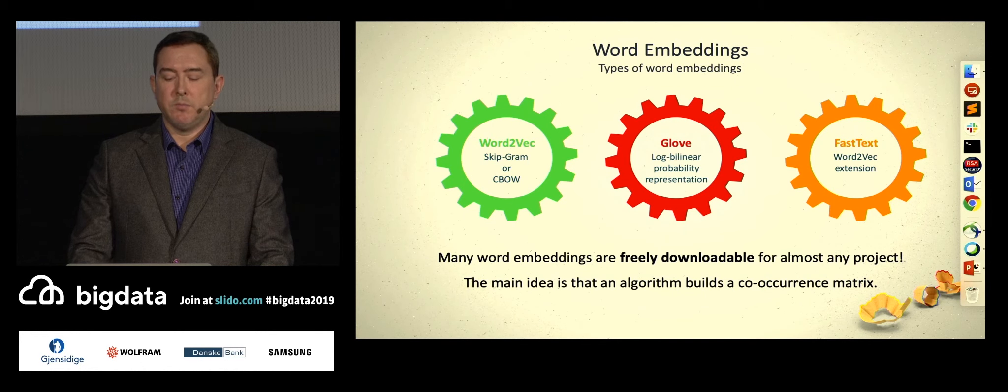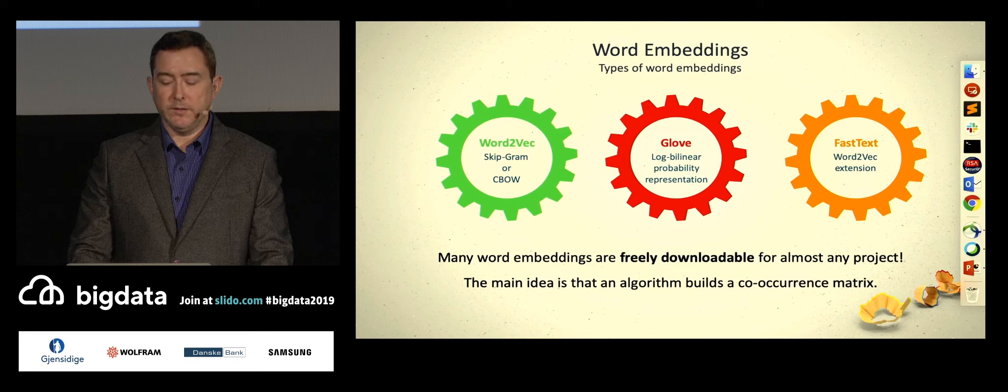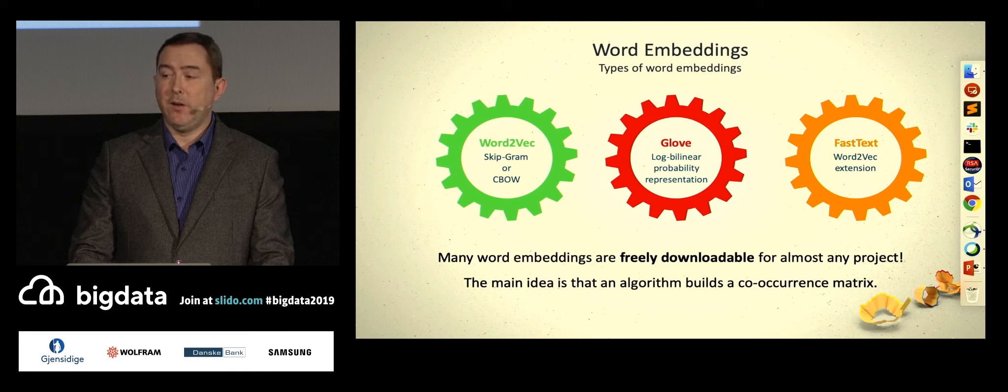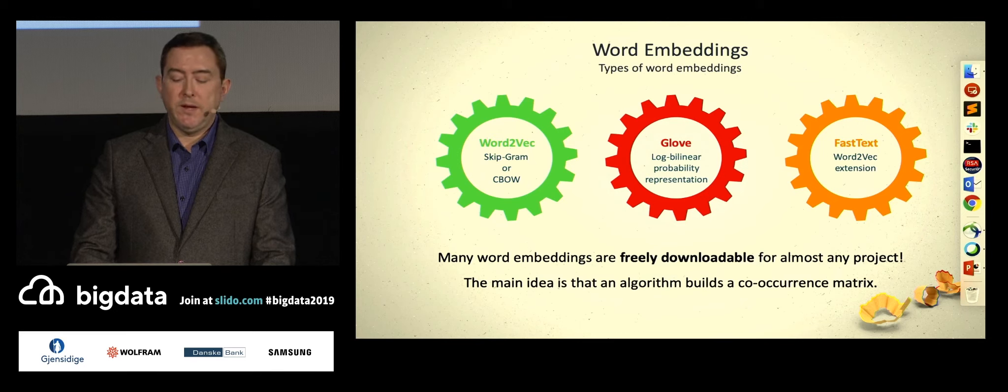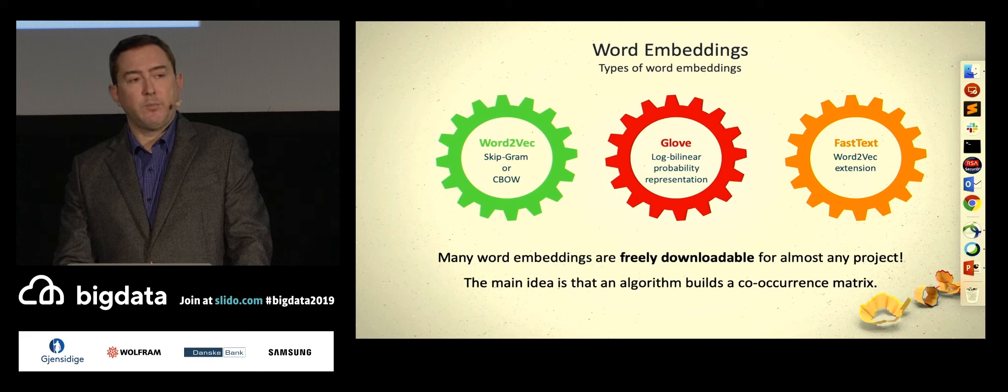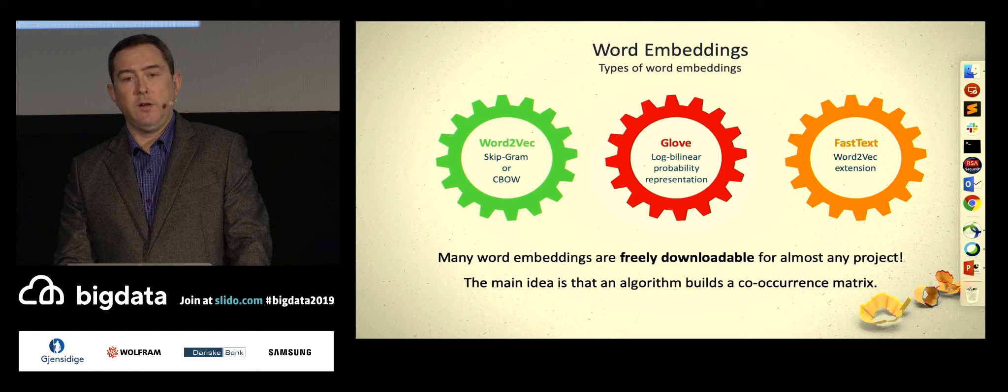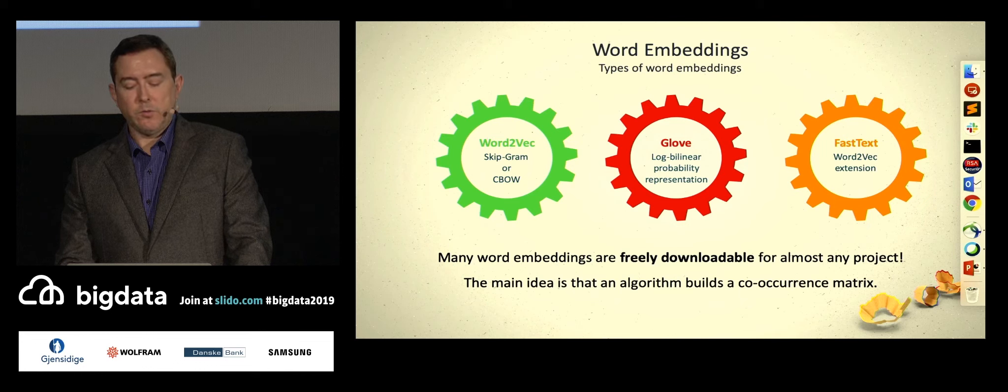The three main types of word embeddings are Word2Vec, GloVe, or FastText. Word2Vec is probably the most commonly used word embedding type and is primarily what OpenNMT uses. GloVe and FastText are also quite common, especially since FastText comes from Facebook.